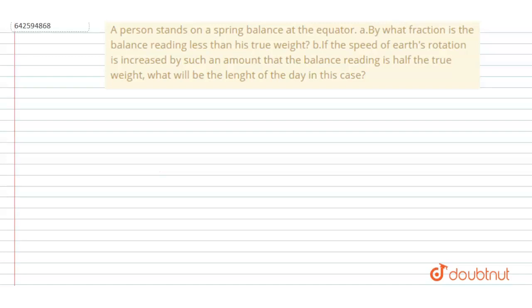A person stands on a spring balance at the equator. By what fraction is the balance reading less than his true weight? And if the speed of the earth's rotation is increased by such an amount that the balance reading is half of the true weight, what will be the length of the day in that case?